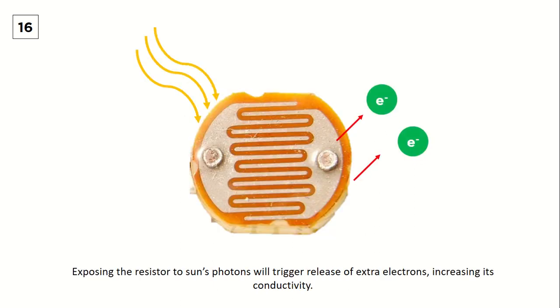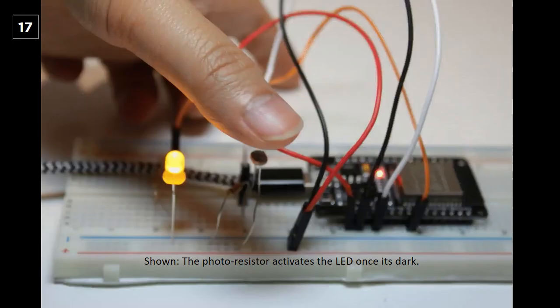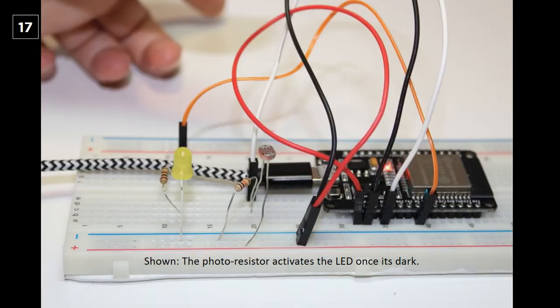Once light hits the resistor, it releases extra electrons into the surrounding area where the two leads are connected. This increases the conductivity of the wire, allowing for more current to pass through it. Since their function depends on the intensity of light falling on them, they are ideal for use as smart nightlights and other light-sensing projects.